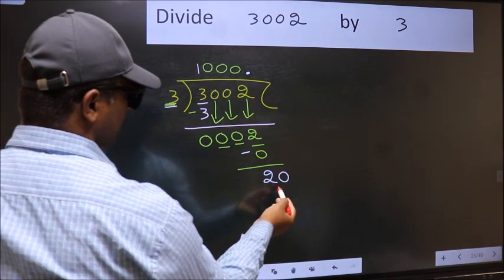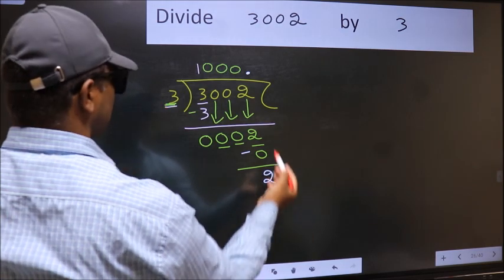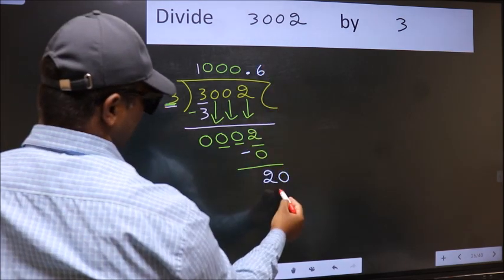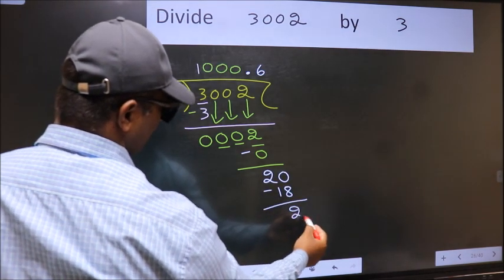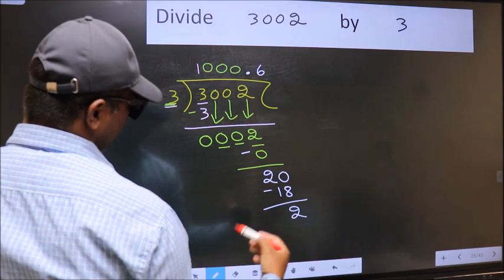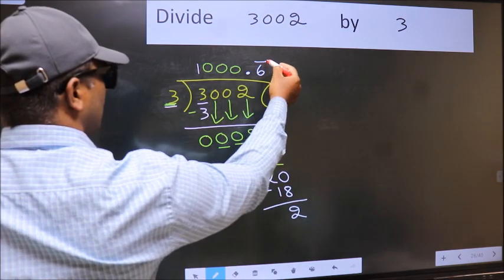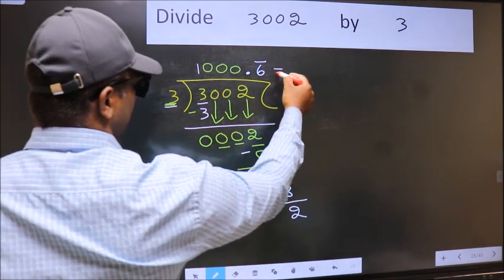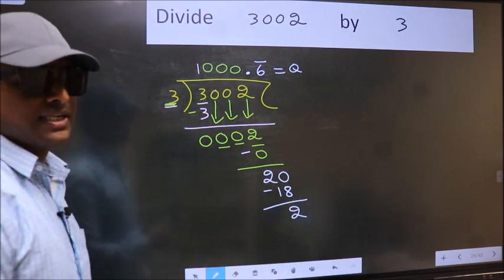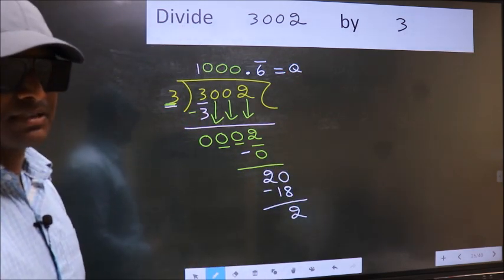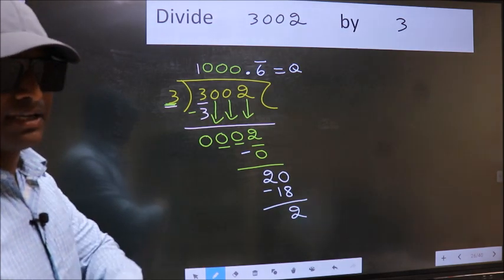So 20. A number close to 20 in the 3 table is 3 times 6, which is 18. Now we should subtract. We got 2 again. That means we get bar on this number. So this is our quotient. Did you understand where the mistake happens? You should not do that mistake.